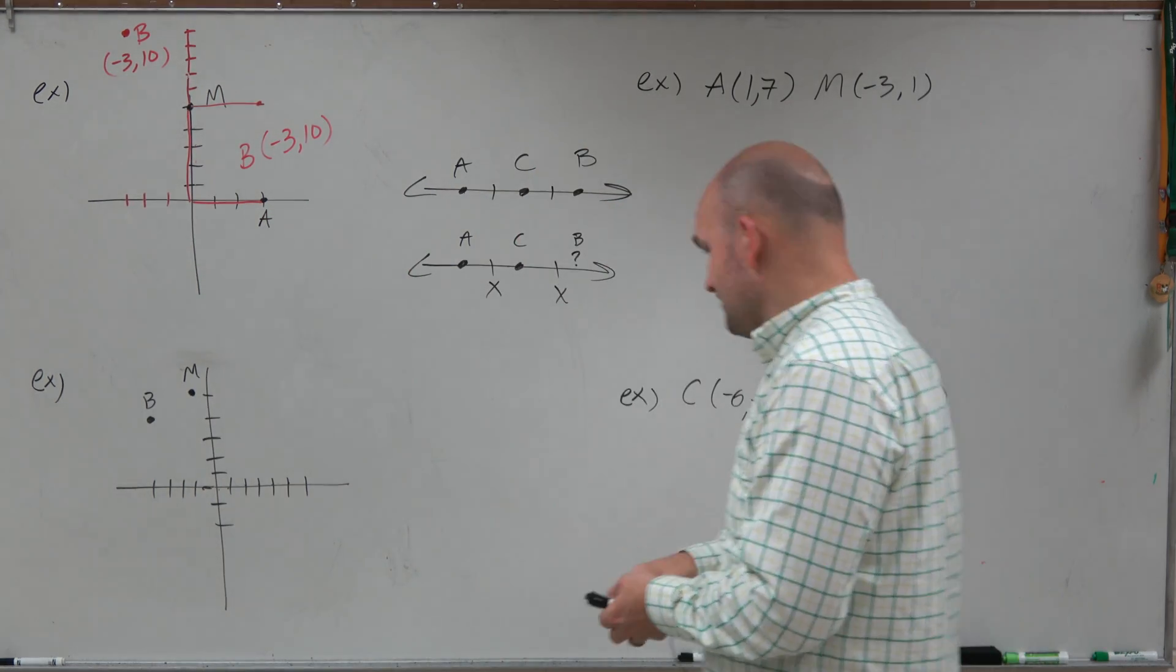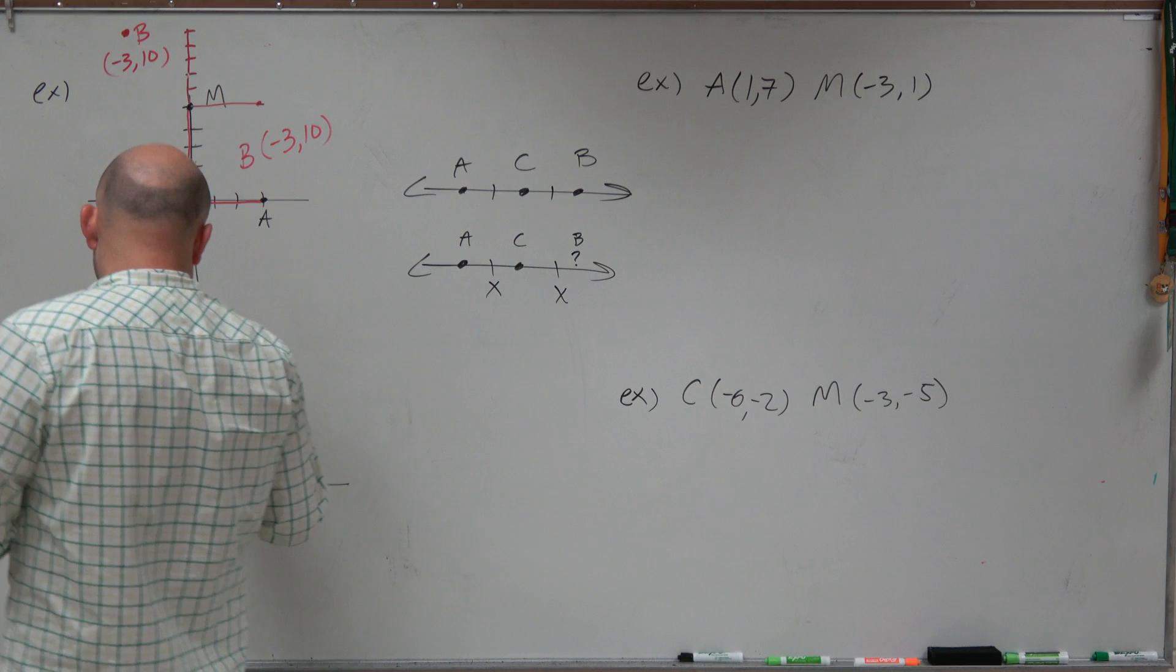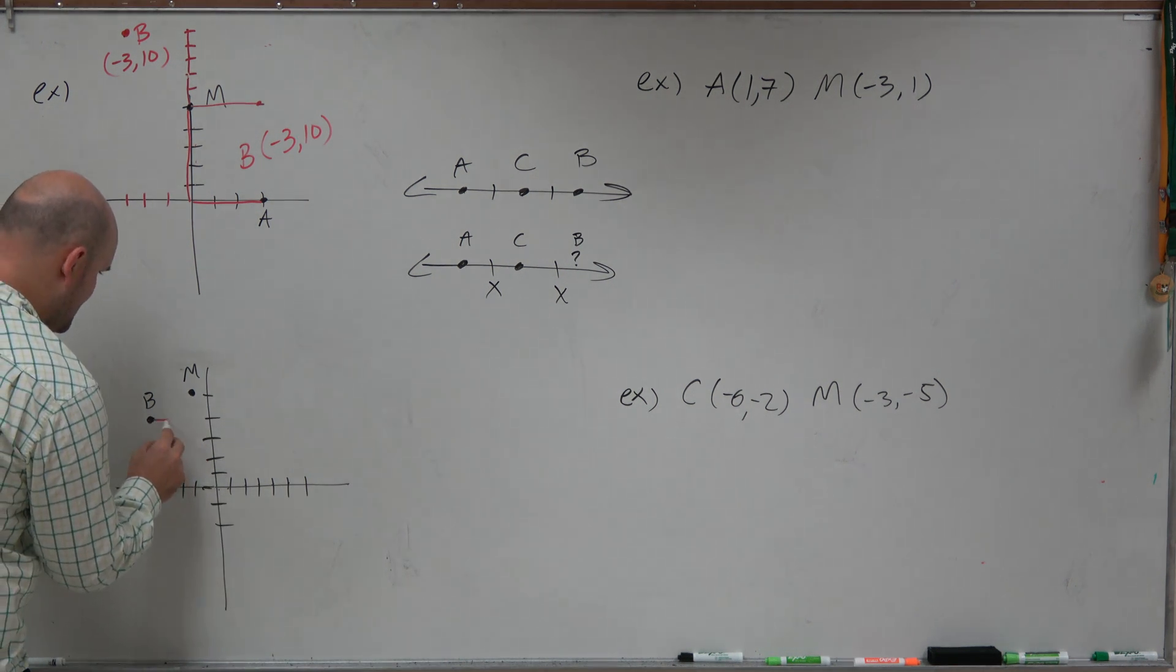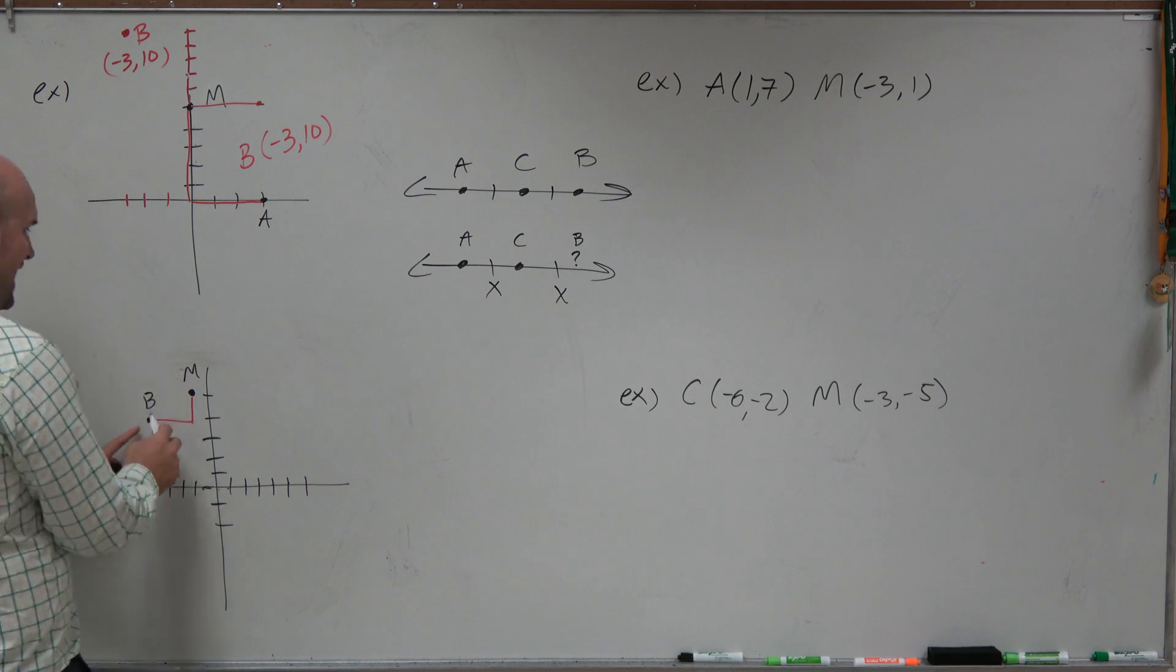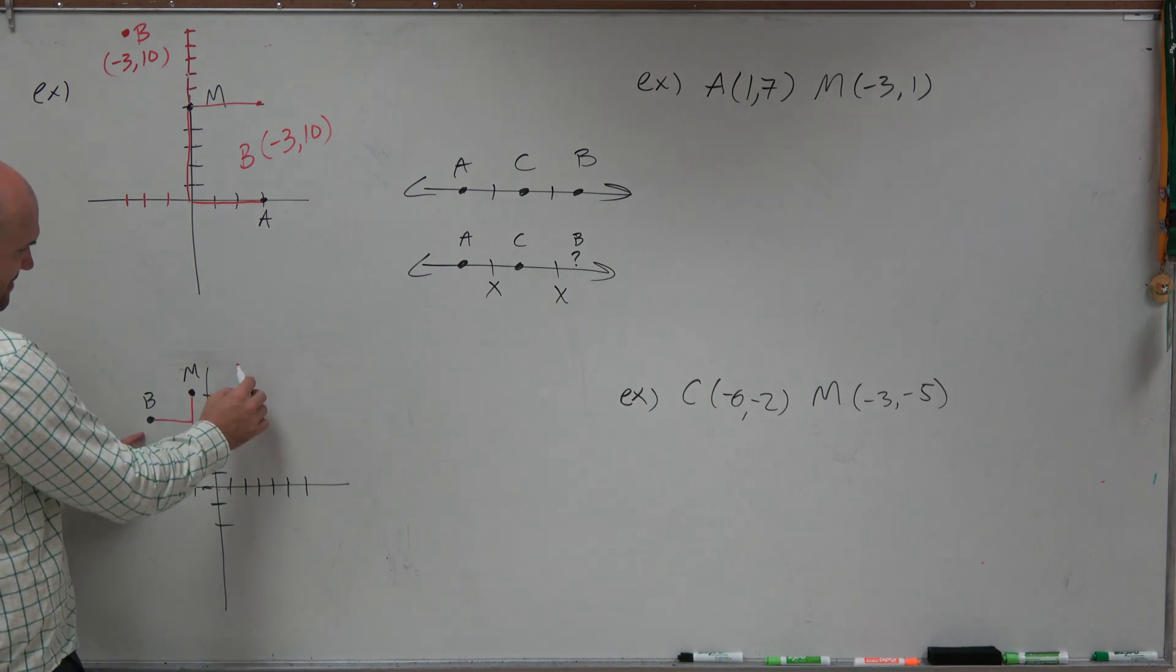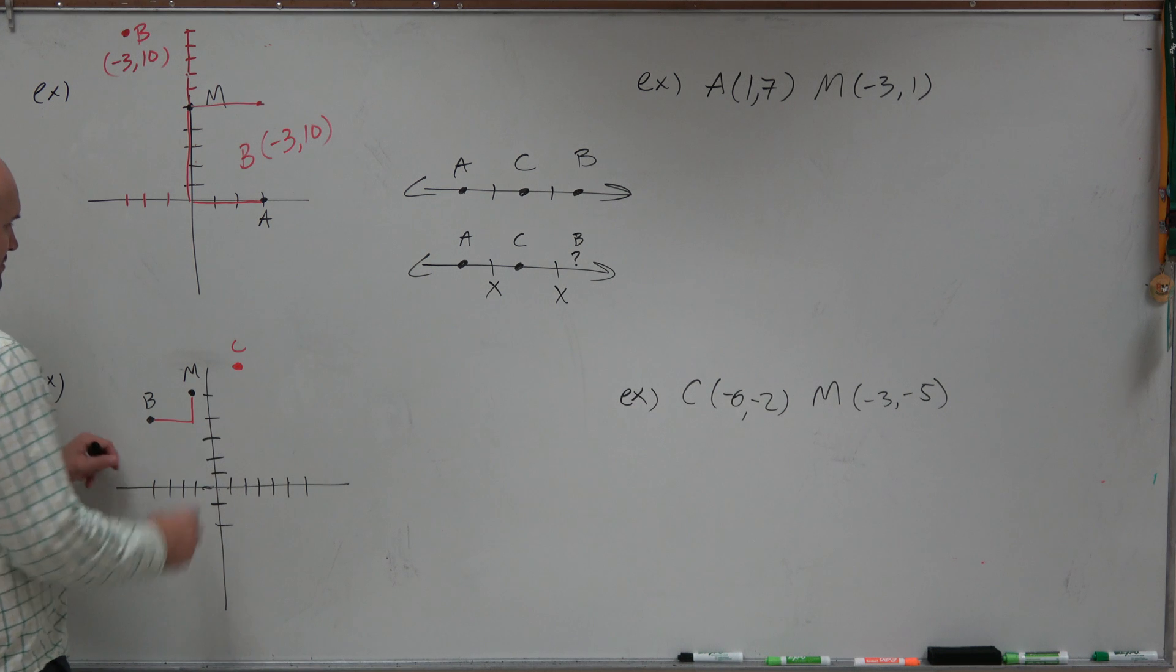Over here, we can do the exact same thing. We're looking at our horizontal distance as well as our vertical distance. If M is the midpoint, I can project that my other endpoint is going to be over here, and we'll call this C.